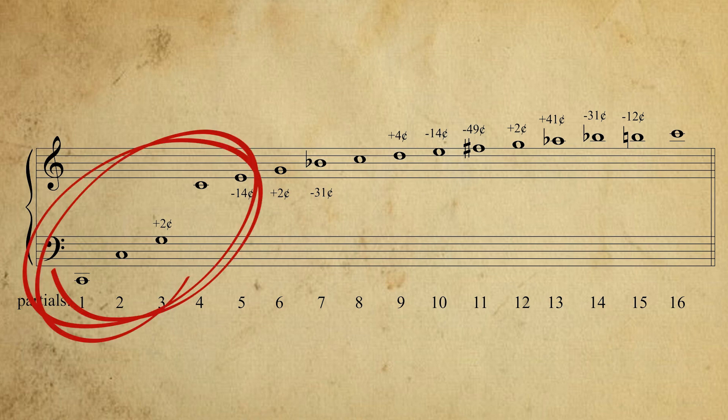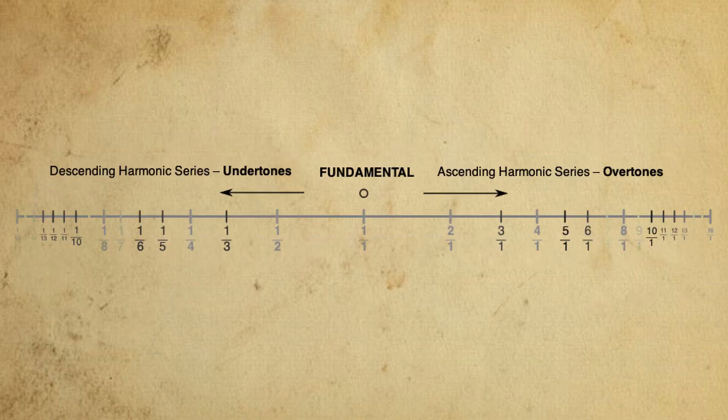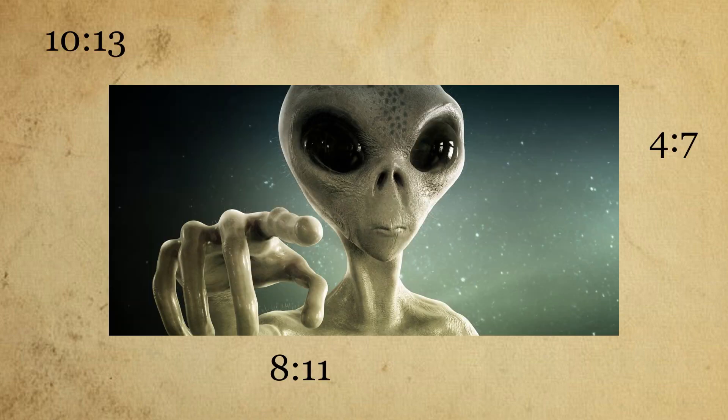The first five notes in the harmonic series form a major triad. Each interval in the series can be expressed as a whole number ratio. The lower the ratio between the frequencies of two notes, the more consonant they sound. The first intervals of the overtone series sound very familiar to western ears. The higher up we go, though, the more complex the ratios become, and the more they start to sound alien to us.